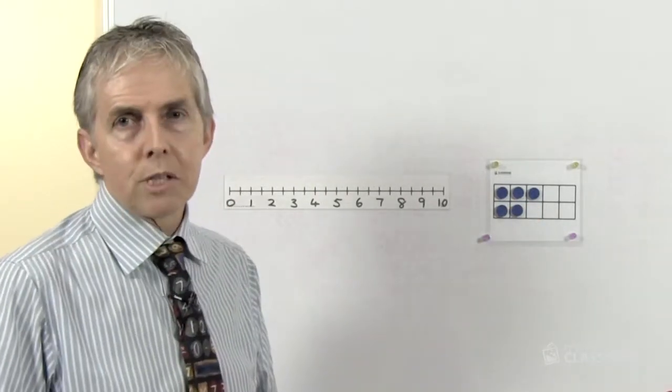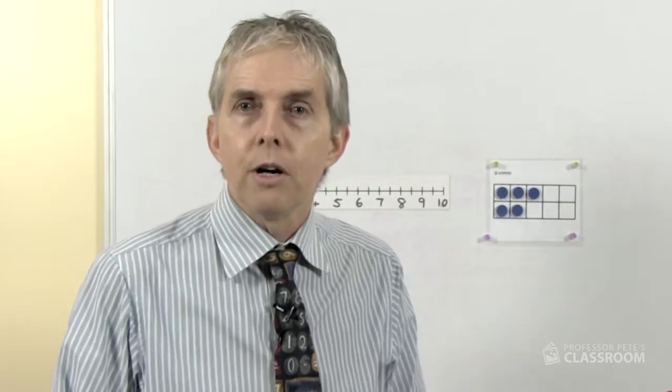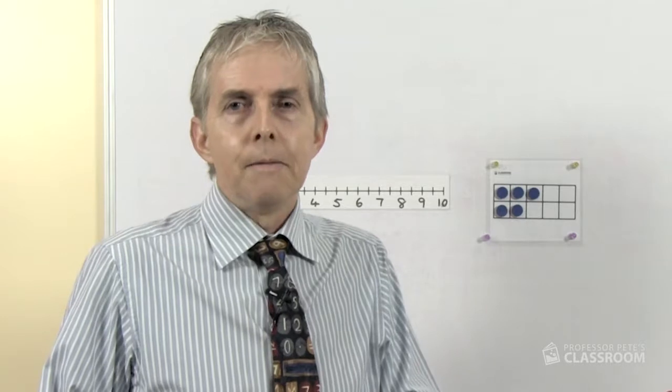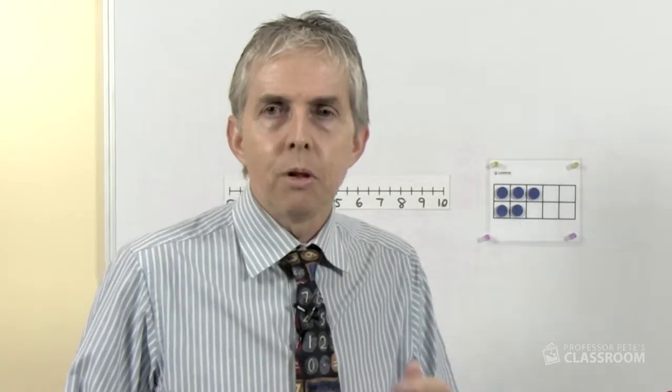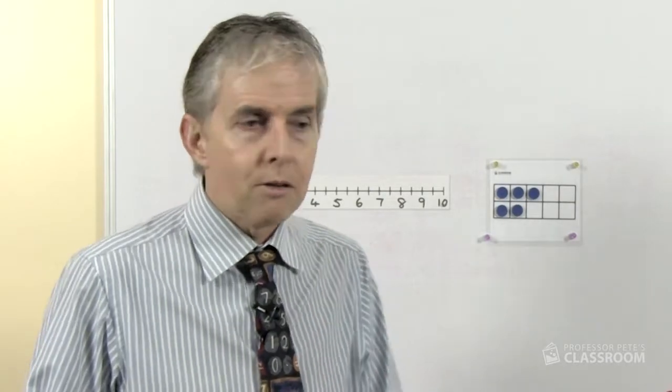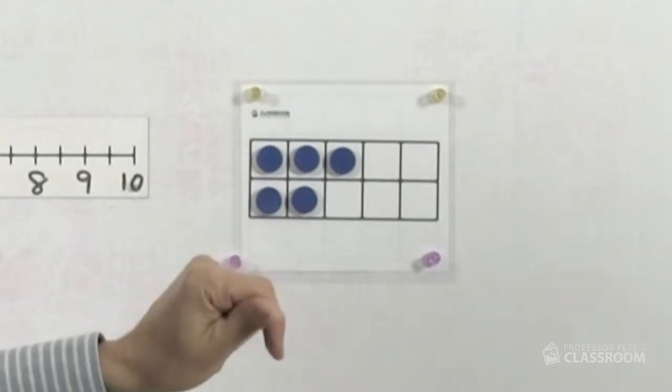So let's look at the 10 frames for a start. A 10 frame is a really good device for helping students to recognize the numbers up to 10 in what we call subitizable patterns, which means they can recognize the number without actually counting the counters. So you'll be able to look at that and see straight away there are five counters.